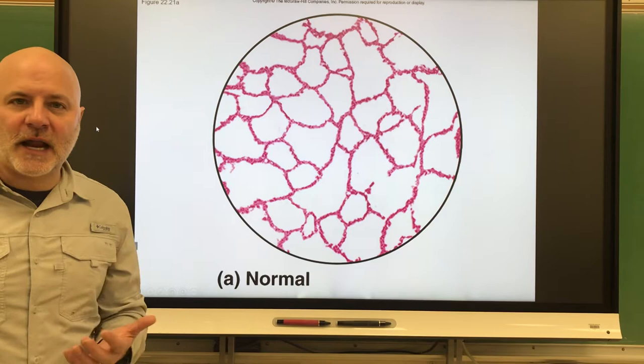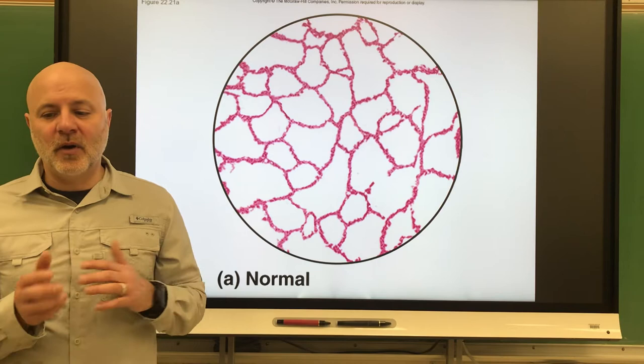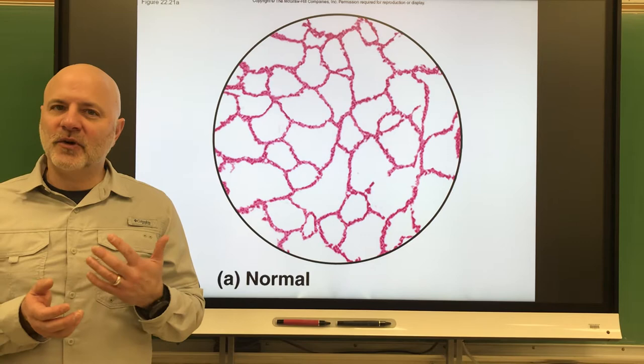Next is chronic bronchitis. This is a chronic infection of the bronchi, usually due to smoking. Here the cilia are immobilized and reduced in number, and the goblet cells also enlarge and produce excess mucus.